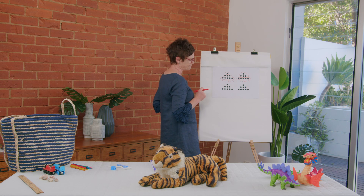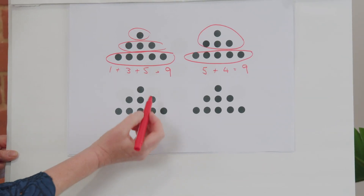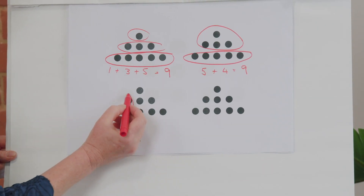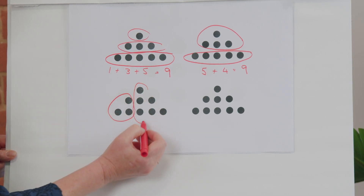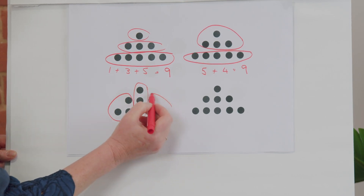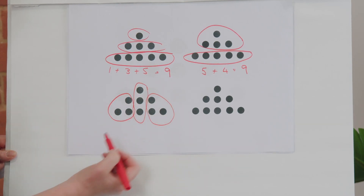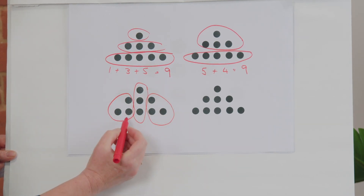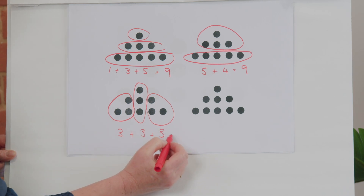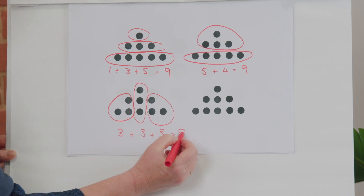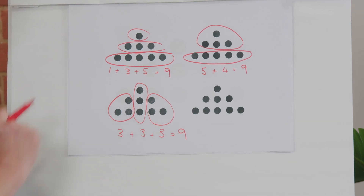Maybe you saw four groups of three — a three, a three, a three, and a three. Three plus three plus three plus three still gives us the same amount: nine. You're right!